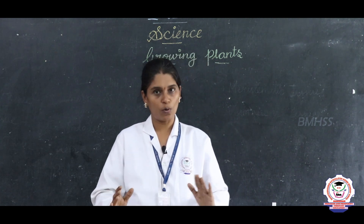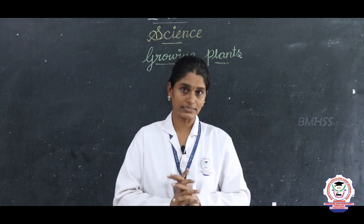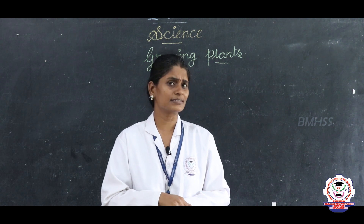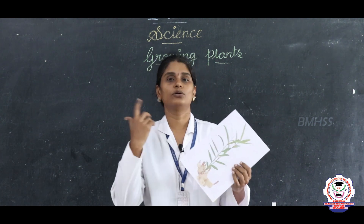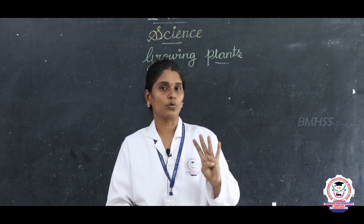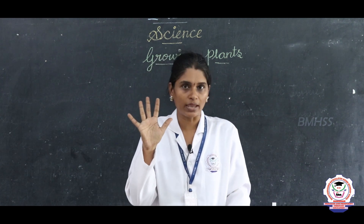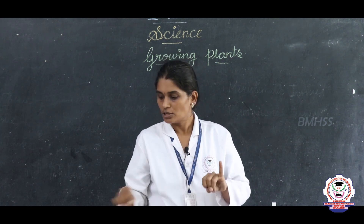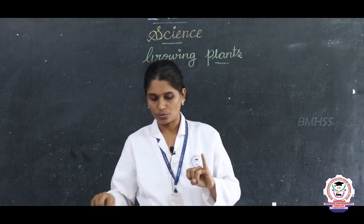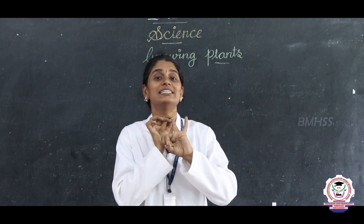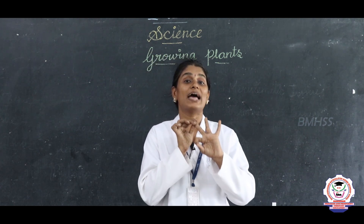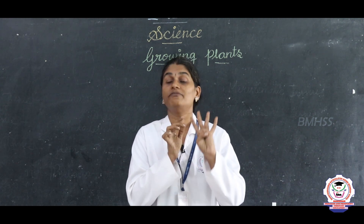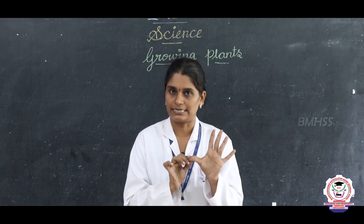We have to grow plants and trees. Before growing plants, you should know that we can grow plants in five ways: we can grow plants from root, we can grow plants from stem, and we can grow plants from seed.